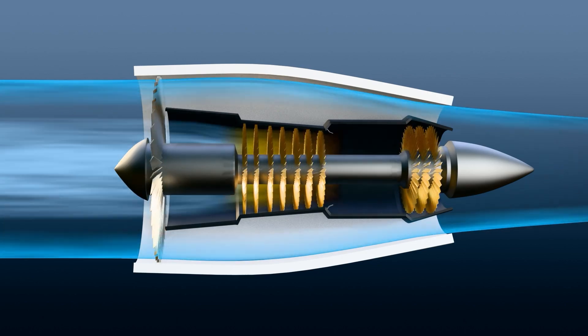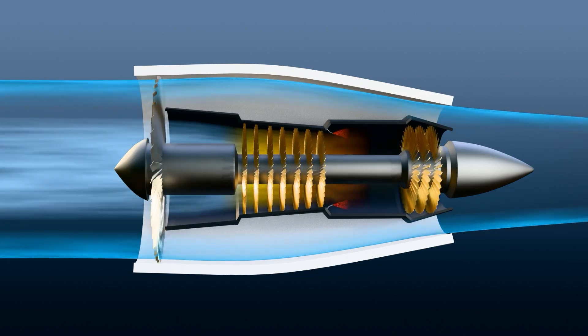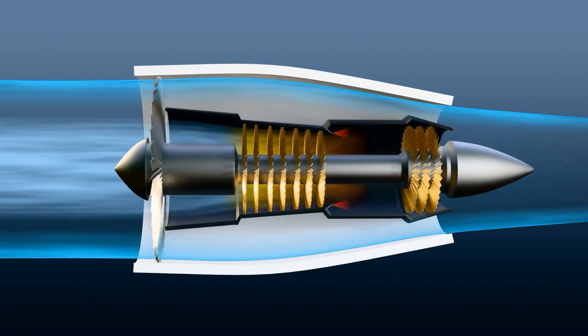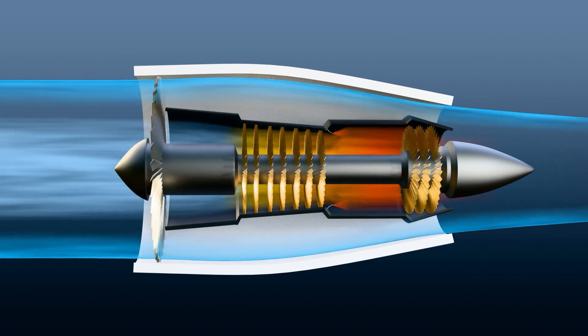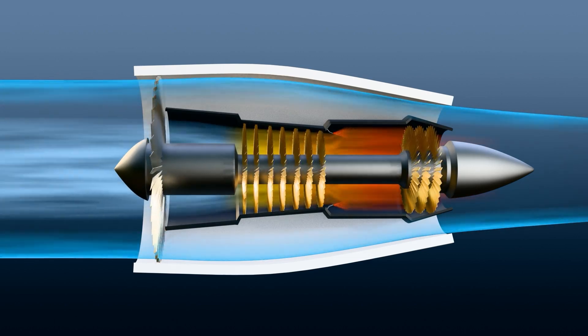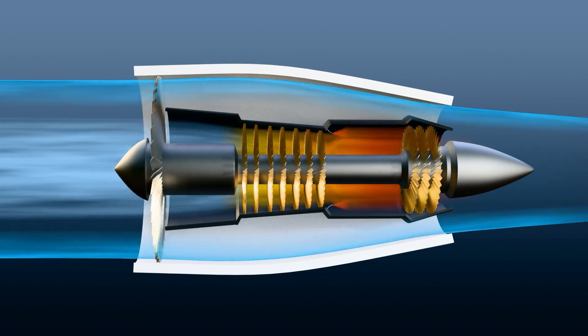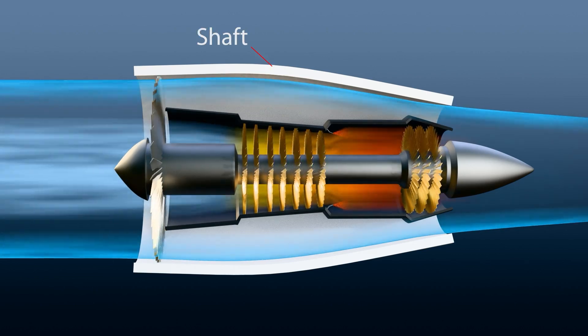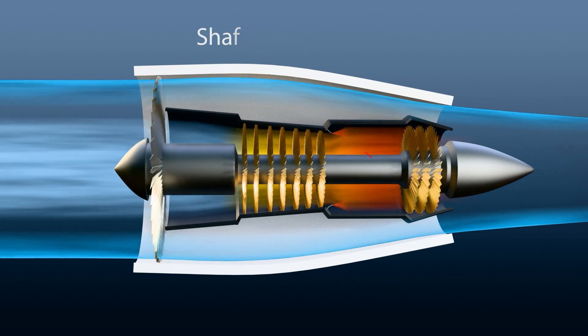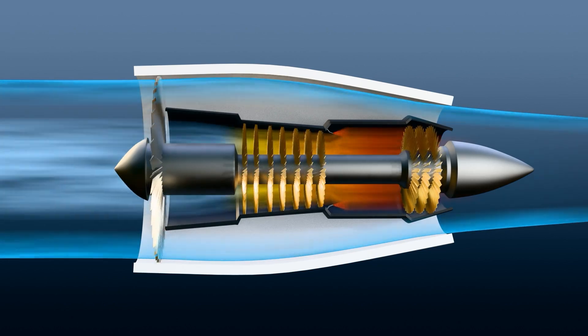Following compression, the high-pressure air enters the combustion chamber, where it is mixed with fuel. The mixture is ignited, creating high-temperature and high-pressure gases. The hot gases produced in the combustion chamber rapidly expand and flow through the turbine, causing it to spin. The turbine is connected to a compressor and a fan through a shaft. As the turbine spins, it drives the compressor and the fan, allowing the cycle to continue.